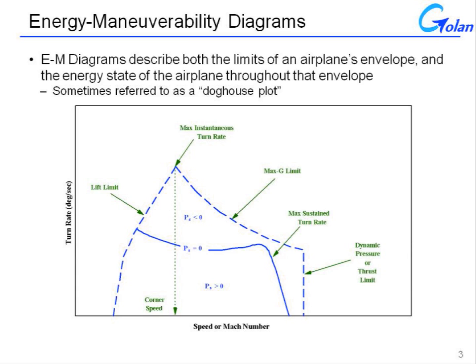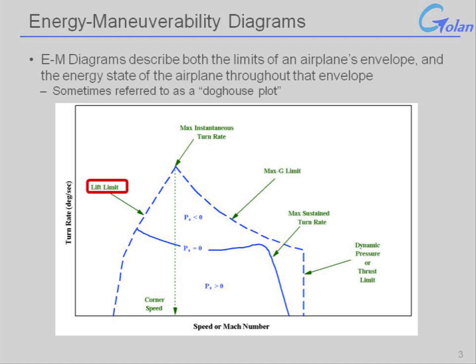There's a great deal of data embedded in an EM plot. On the vertical axis you typically will see turn rate, and on the horizontal axis you'll see Mach number or speed. The envelope will typically have a left-hand edge defined by the lift limit of the aircraft — that's where the aircraft will stall and no longer have the ability to sustain flight. The upper limit is described by the maximum G loading the aircraft is capable of sustaining, and the right-hand limit will typically be some kind of dynamic pressure limit, either a structural limit or a limit in the propulsion system.